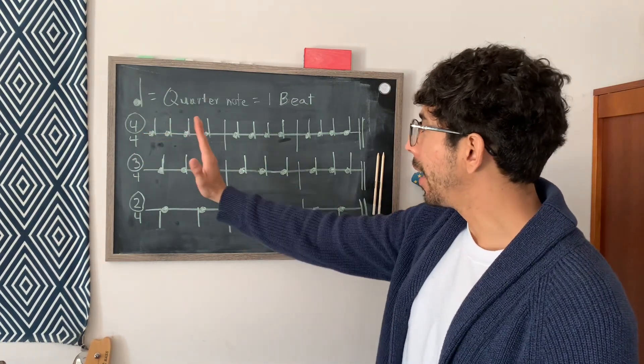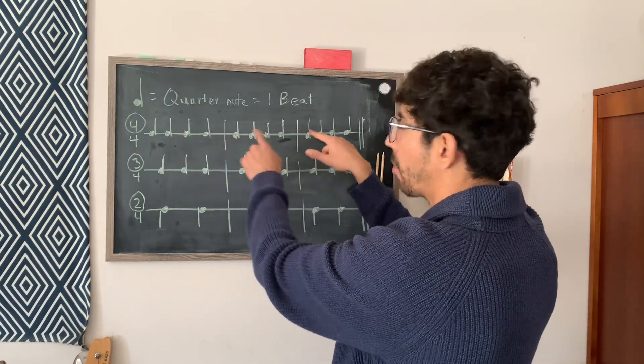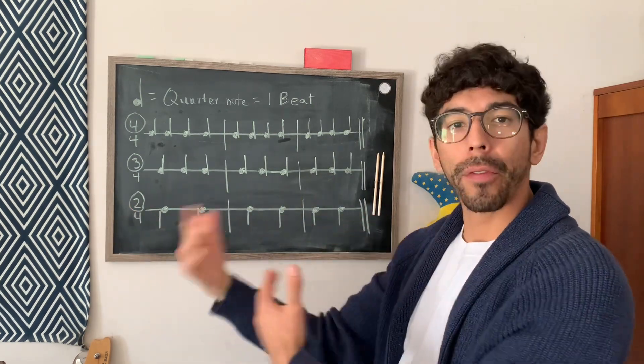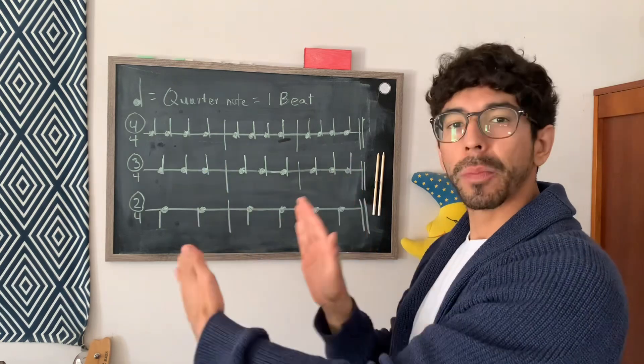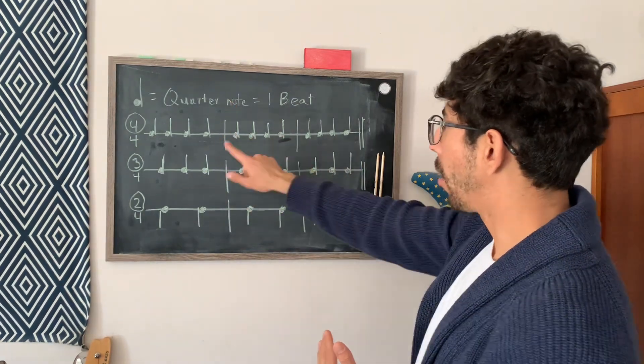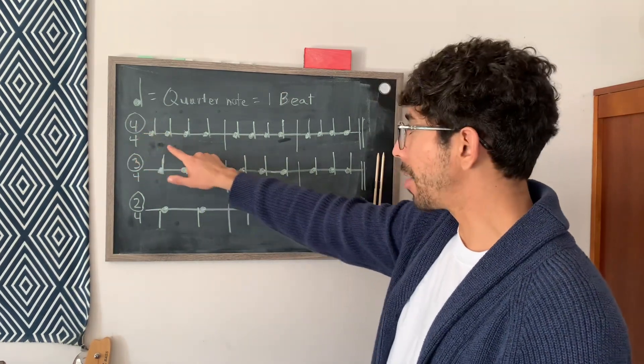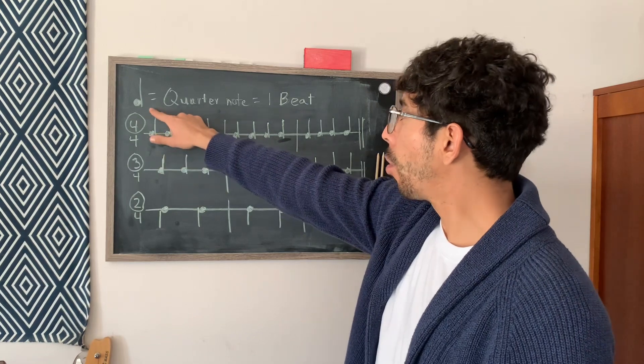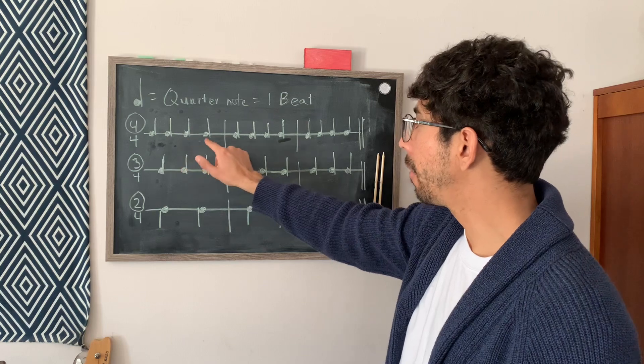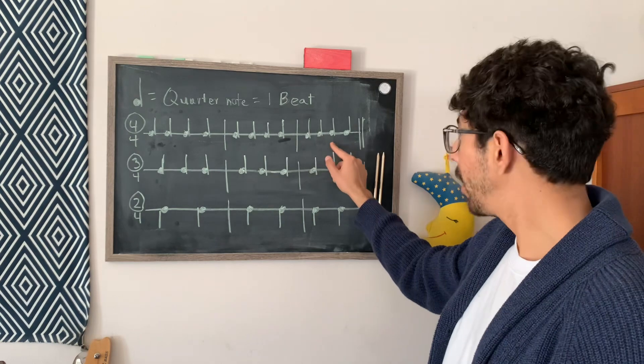So what the top number time signature represents is how many beats there are in a measure. And a measure is the space between the two bar lines. So in a musical measure, it's kind of a space in the music between bar lines. So if we're counting 4-4, it's going to have four beats per measure. So it's going to have, if a quarter note equals one beat, it's going to have four quarter notes. 1, 2, 3, 4. 1, 2, 3, 4. 1, 2, 3, 4.